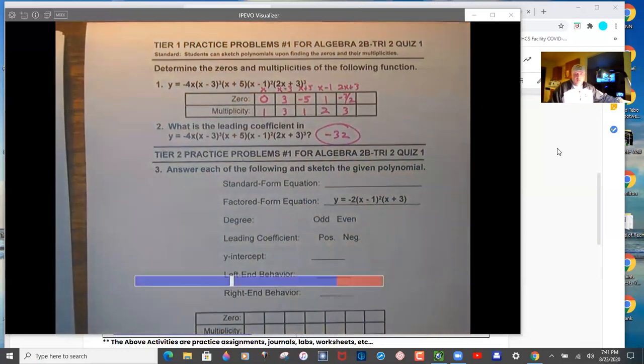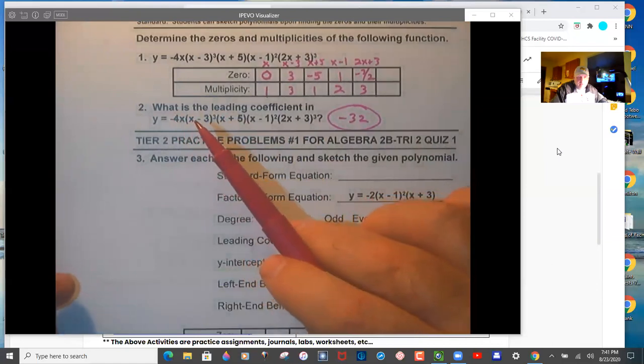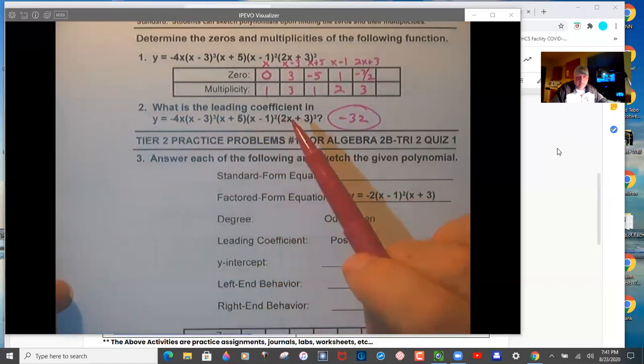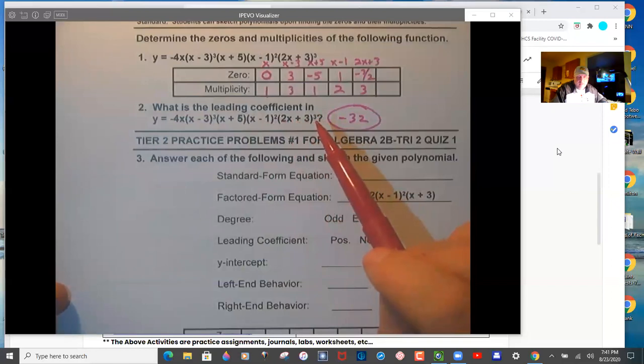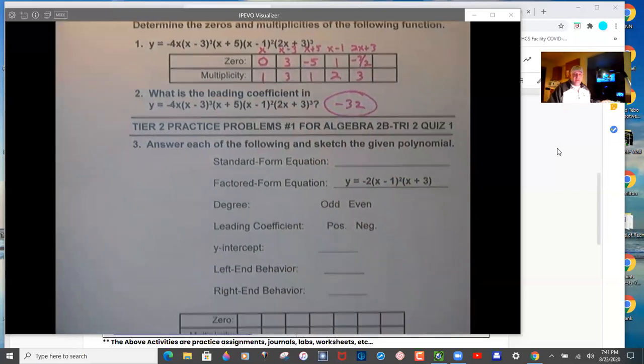You need to make sure that you take this coefficient out here and then multiply by all these coefficients on the x terms, and don't forget to raise it to the power. That coefficient on the x term, raise it to the power on the outside of the parentheses to get that.